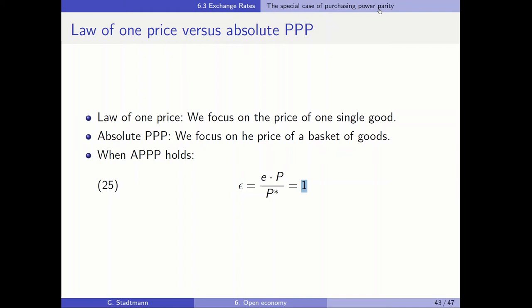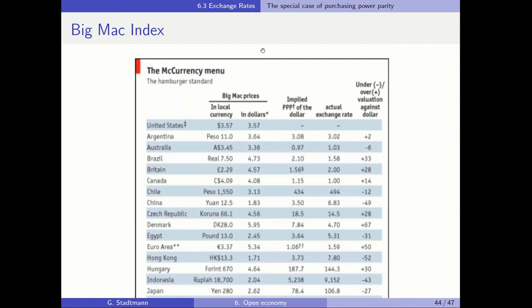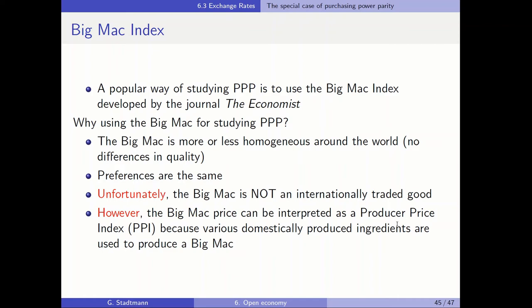The last topic covered in this chapter on purchasing power parity is the so-called Big Mac index. You can see here a table of the Big Mac index, and I would like to focus on the row about Denmark. A popular way of studying purchasing power parity is to use the Big Mac index, which is developed by the journal The Economist.